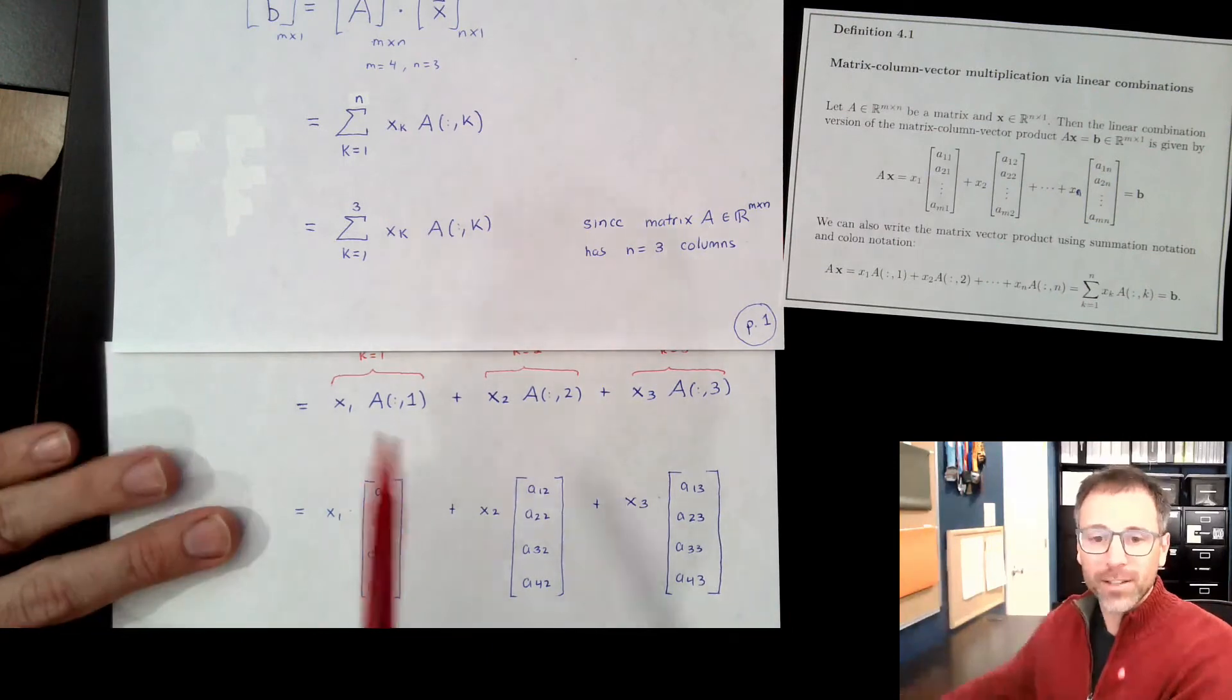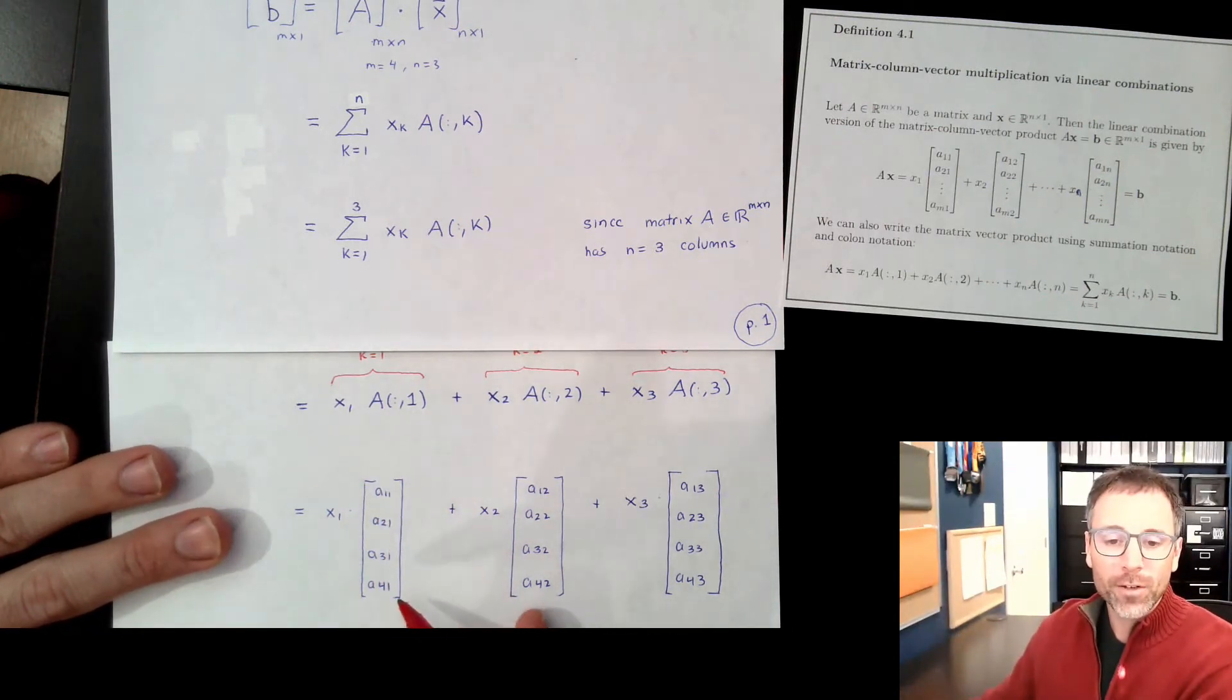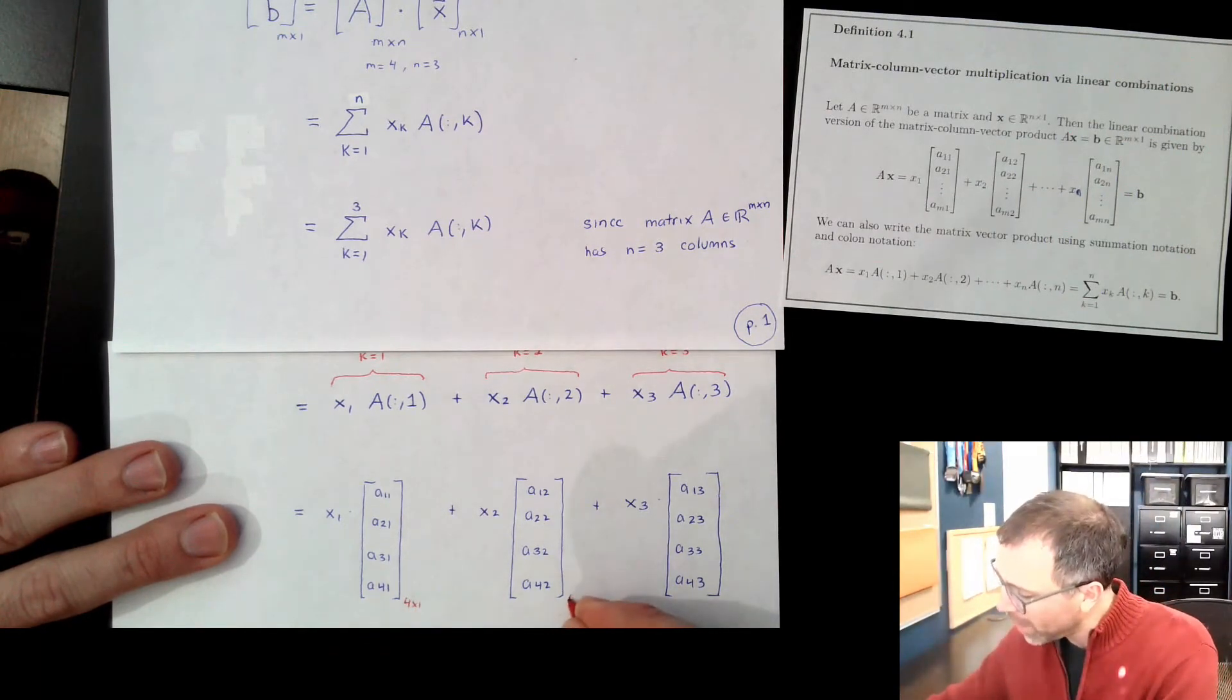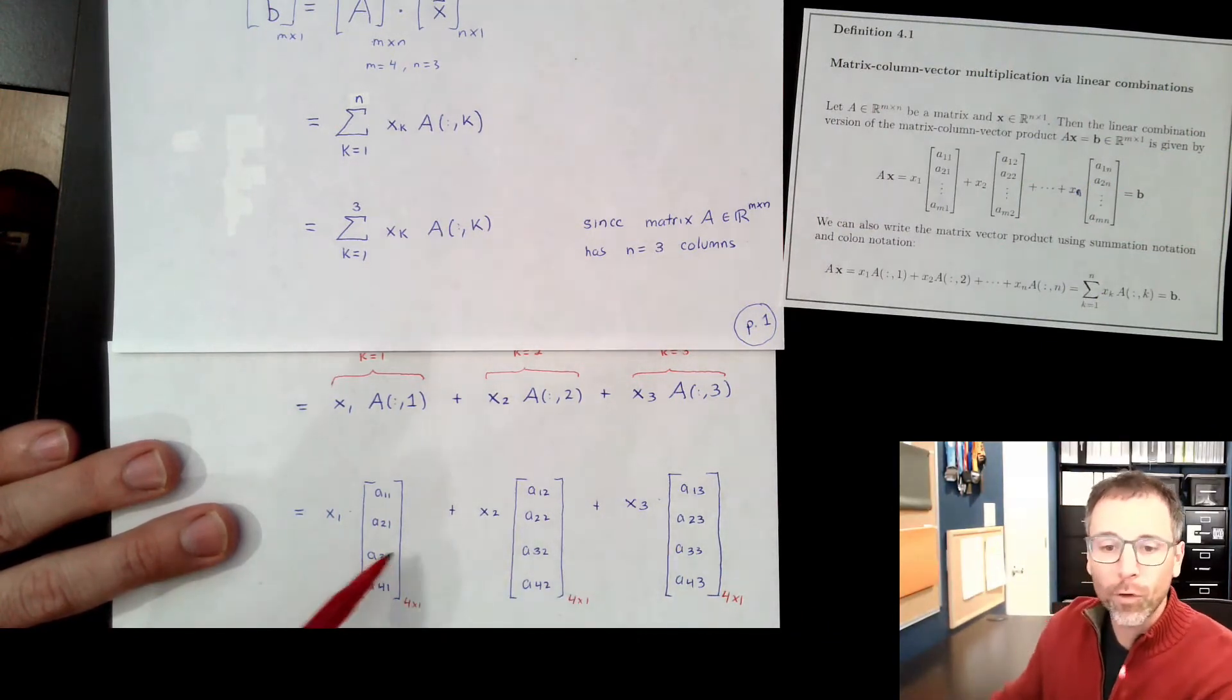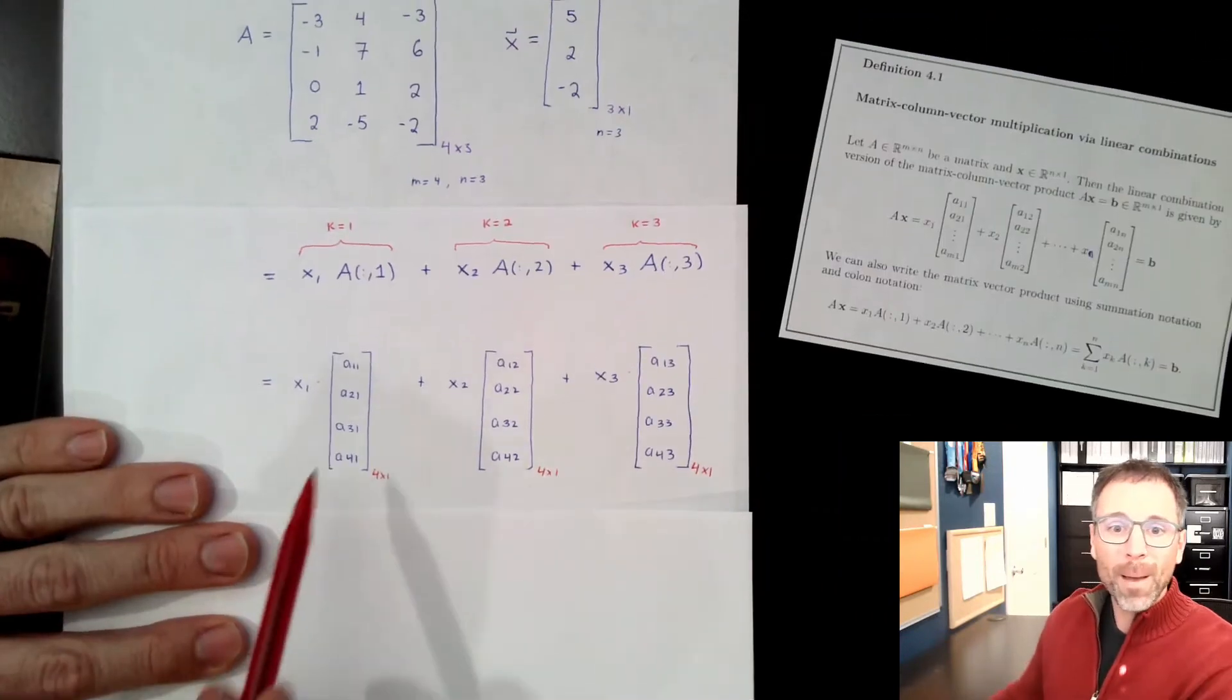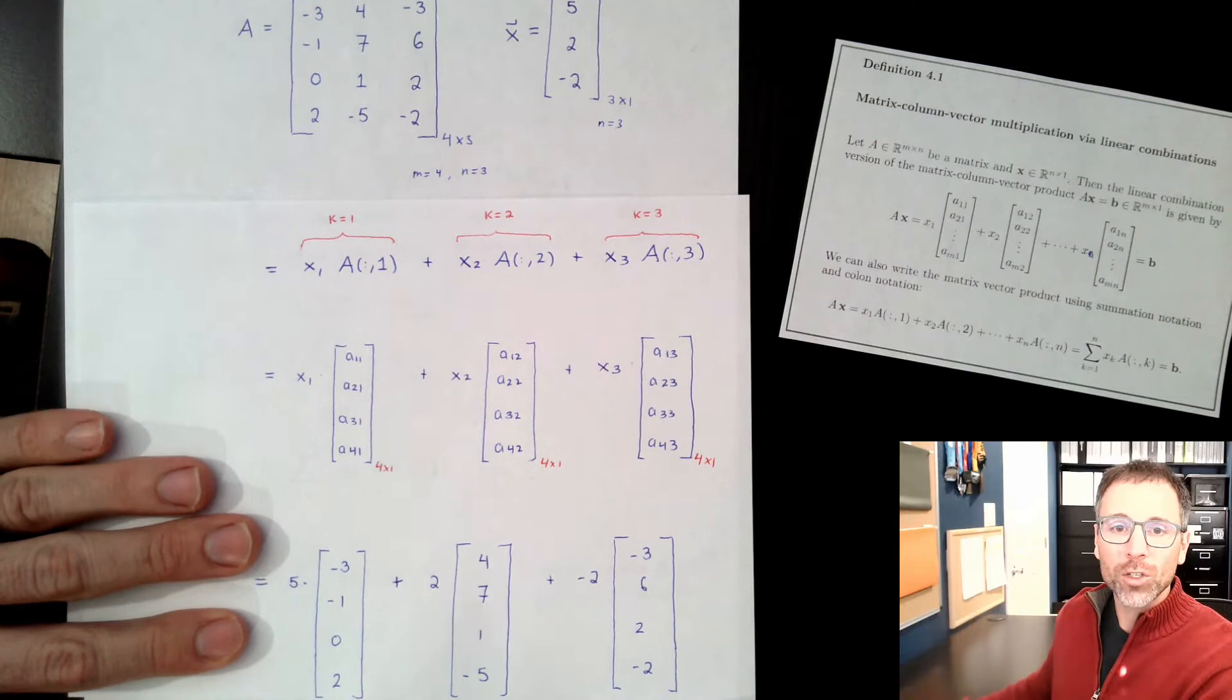We can now actually look at this. Remember A was a 4 by 3, which means each individual column is going to be a 4 by 1. So this is a 4 by 1, this is a 4 by 1, and this is a 4 by 1. So the output will be a 4 by 1 since this is a linear combination of 4 by 1 vectors. But remember, we're actually given the individual entries of those columns.